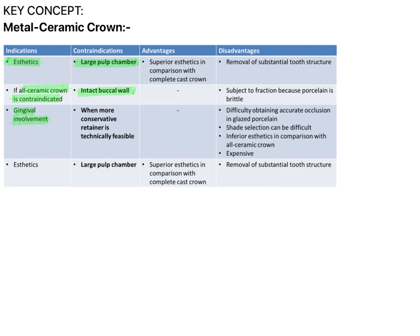If there is an intact buccal wall, you should go for a partial coverage crown — a 3/4 crown or a 7/8 crown — keeping that wall intact. When a more conservative retainer is technically feasible, if that abutment is suitable for a more conservative treatment option, you should prefer that.